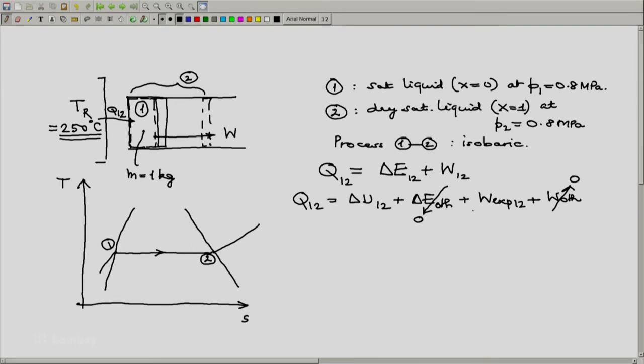Then we write W expansion 12 as integral P dV from 1 to 2. We say that this integral is possible. For that we will assume that the process is quasi-static. And in that we are told that the pressure is constant. So this particular term becomes equal to P delta V12.